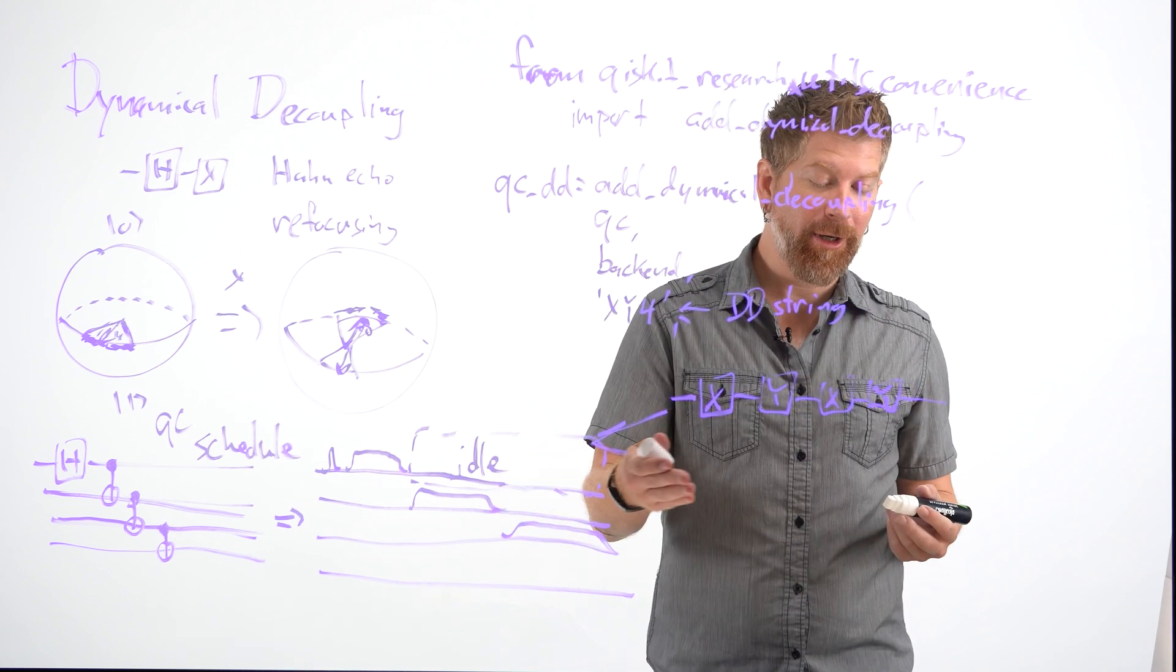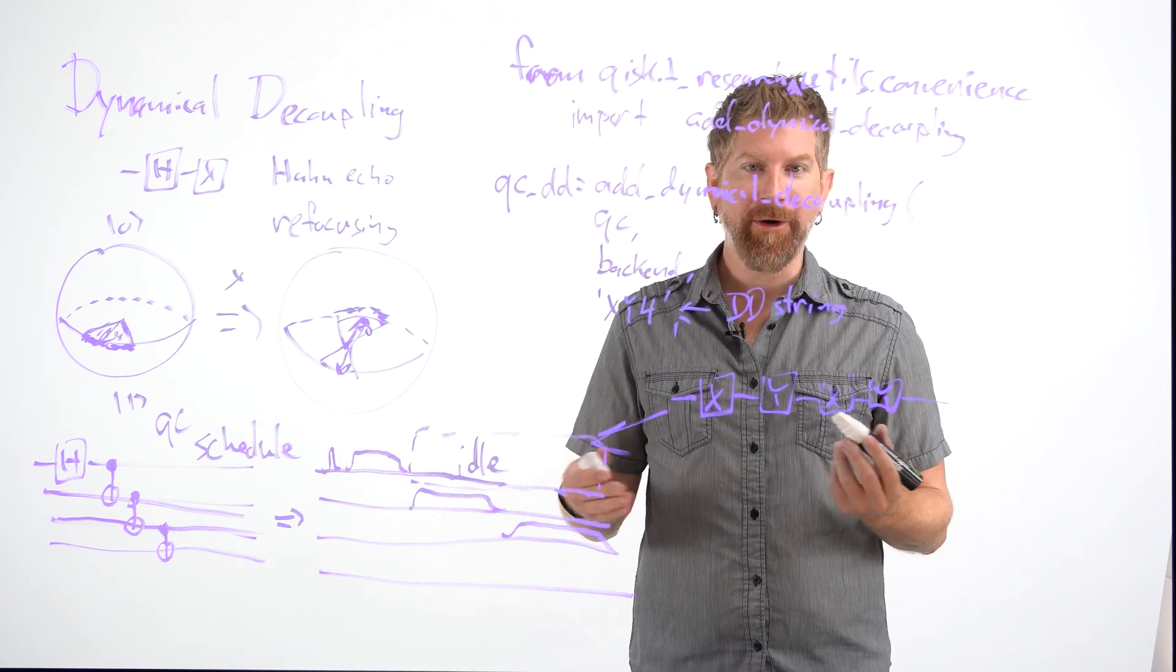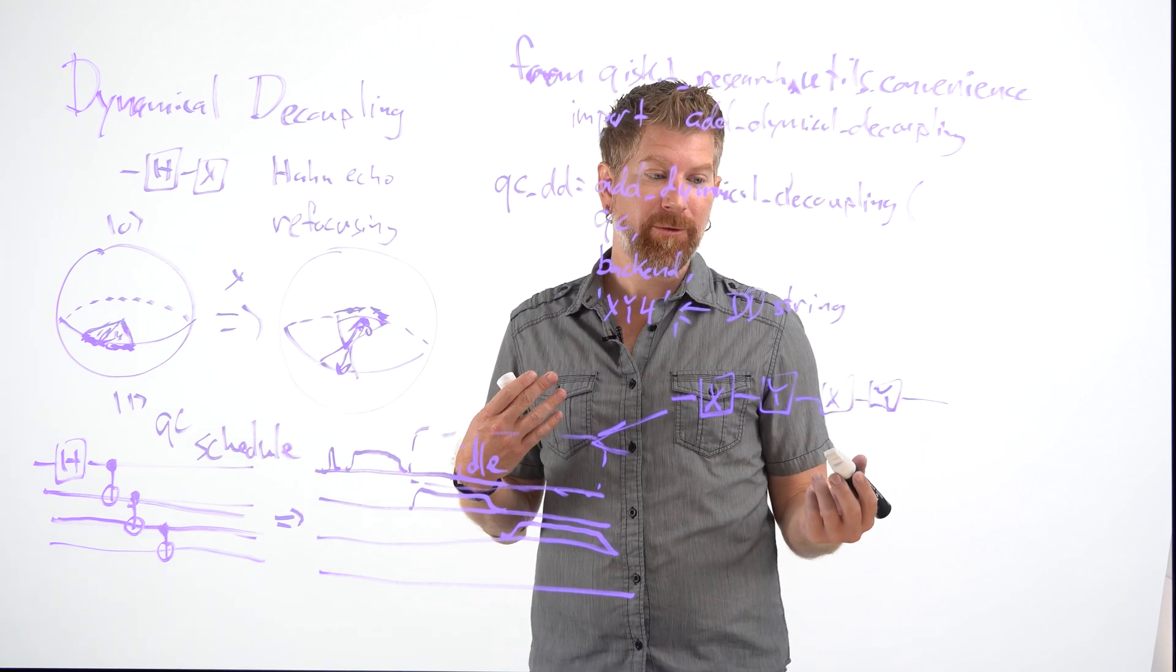Now, there's also a single qubit error that adds up on top of this, but that's another issue. So varying amounts of DD sometimes are beneficial, sometimes they're worse for you.